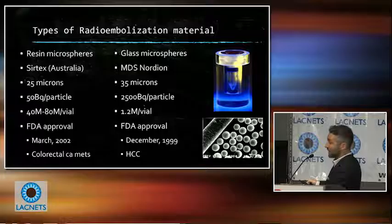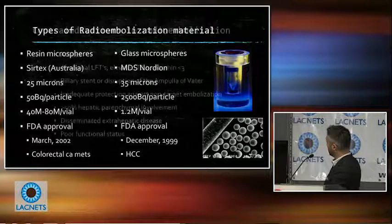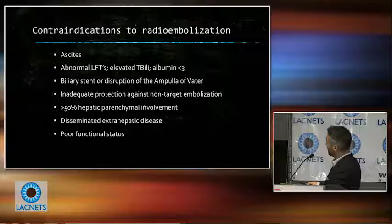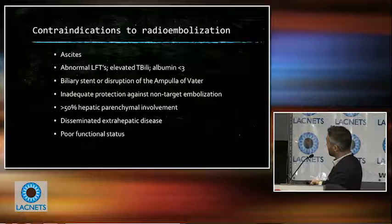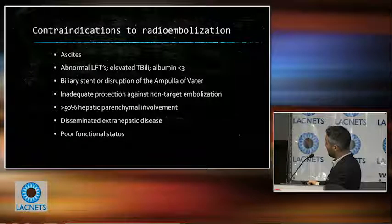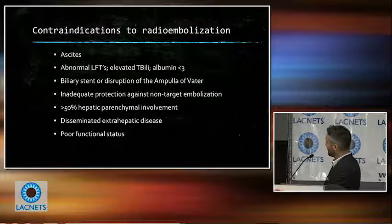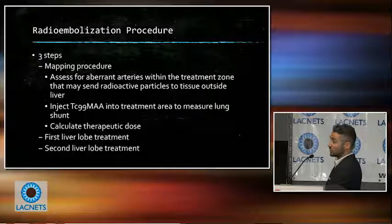There are two types of radioactive material for radioembolization: resin microspheres called SIRSpheres and glass microspheres called TheraSpheres. For neuroendocrine tumor, we tend to use SIRSpheres. Contraindications include abnormal liver function, disruption of the ampulla of Vater — which is the biliary sphincter — creating higher risk of infection, concern for non-target embolization to the lungs or bowel, greater than 50% hepatic involvement with tumor, disseminated extrahepatic disease, and poor functional status.